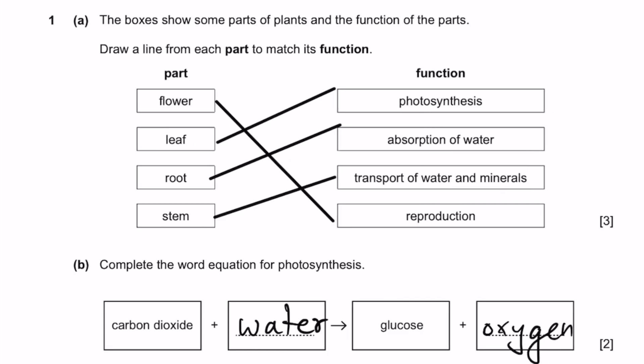Question 1 part A. The boxes show some parts of plants and the function of the parts. They are aligned from each part to match its function. The flower is for reproduction, leaf is for photosynthesis, root is for absorption of water, and stem is transport of water and minerals.